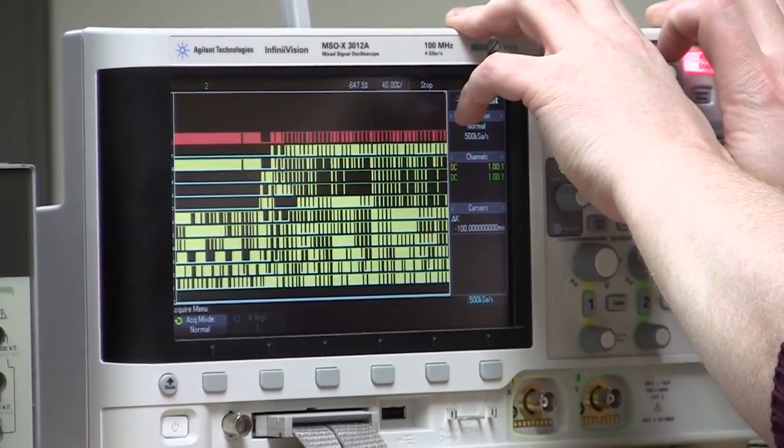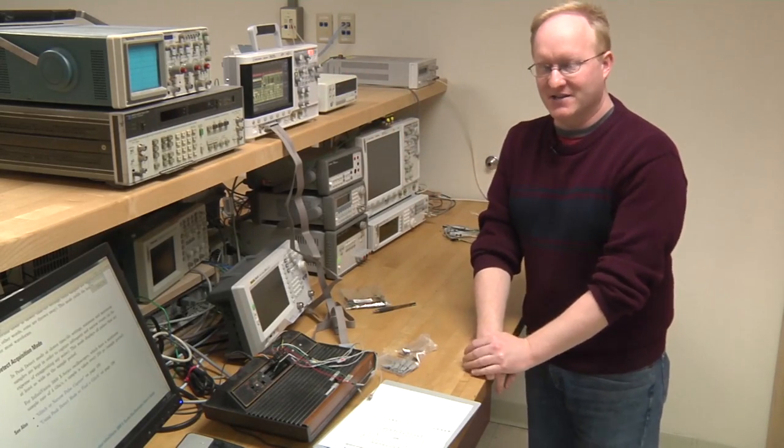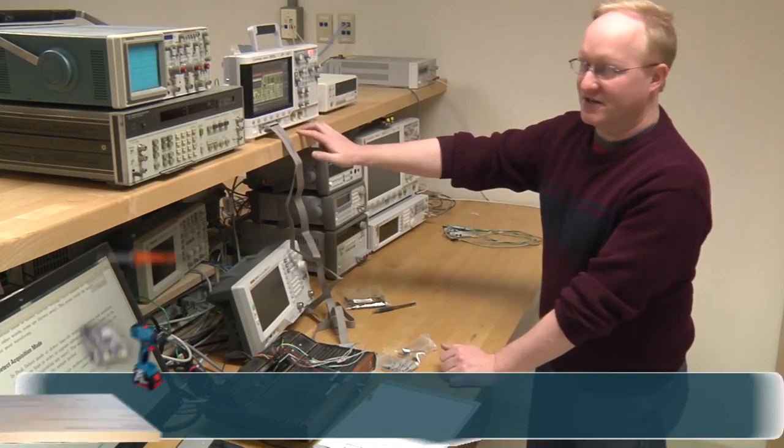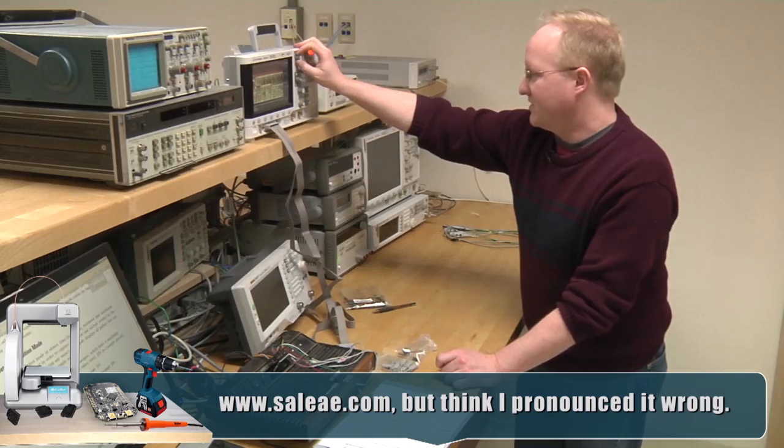And you don't necessarily need a full-fledged scope to do this. There are many smaller logic analyzers you can buy, such as from Sully, the little USB devices that you can plug in. And you can do this on your computer. You can also get oscilloscopes that plug into your computer. But we have these scopes here, so we're going to use them.